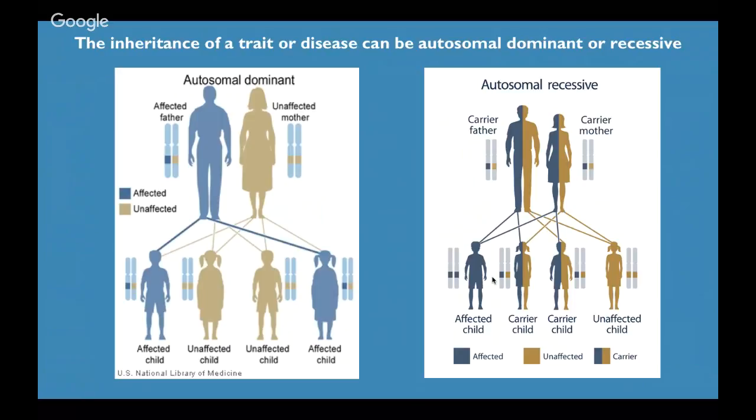First let's talk about something that's dominant. The blue is the dominant allele and the tan is the recessive allele. The father has a dominant version and a recessive version — one copy is enough for him to be affected by whatever trait this is. The mother has two recessive versions and is not affected. Their children randomly get whichever version happens: children that got the blue copy from dad end up being affected because it's dominant, while those that got the tan copy from dad are unaffected.